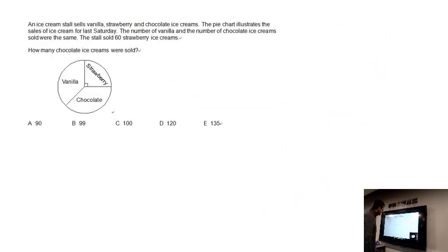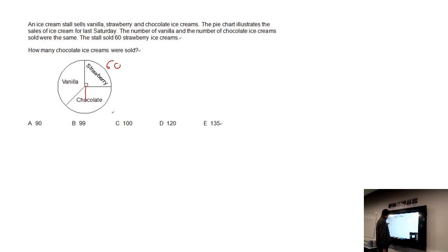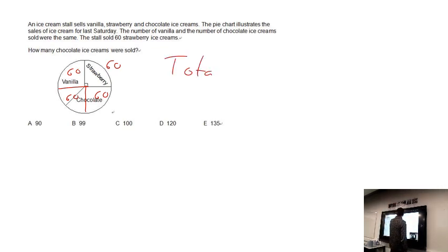For this question, let's see how many people bought ice cream. We know that 60 people bought strawberry ice cream, so each of the four flavours also has 60, and the total number of ice creams sold is 60 times 4, which is 240.